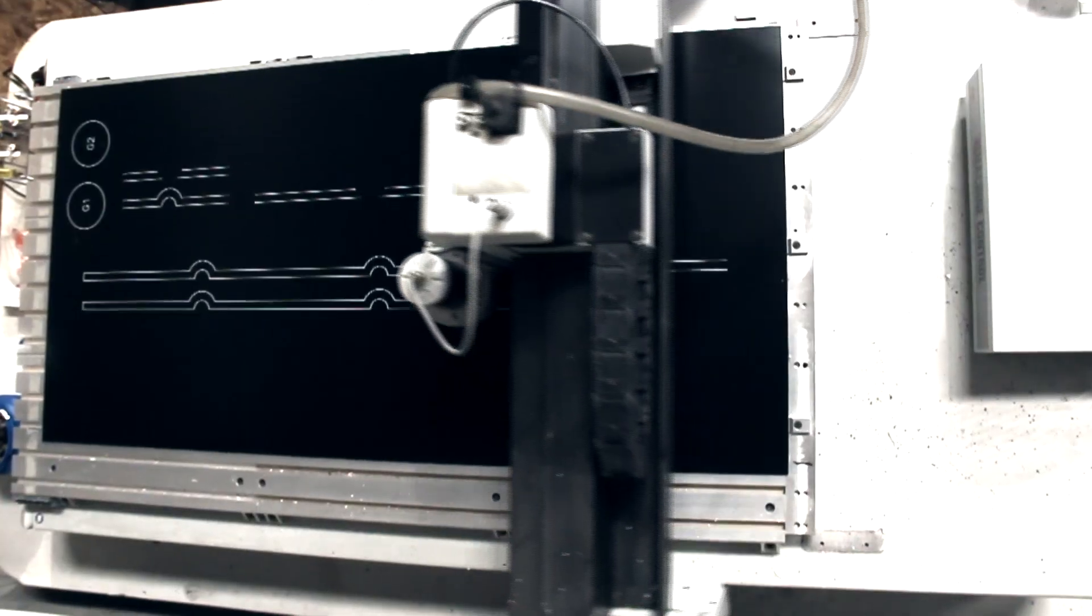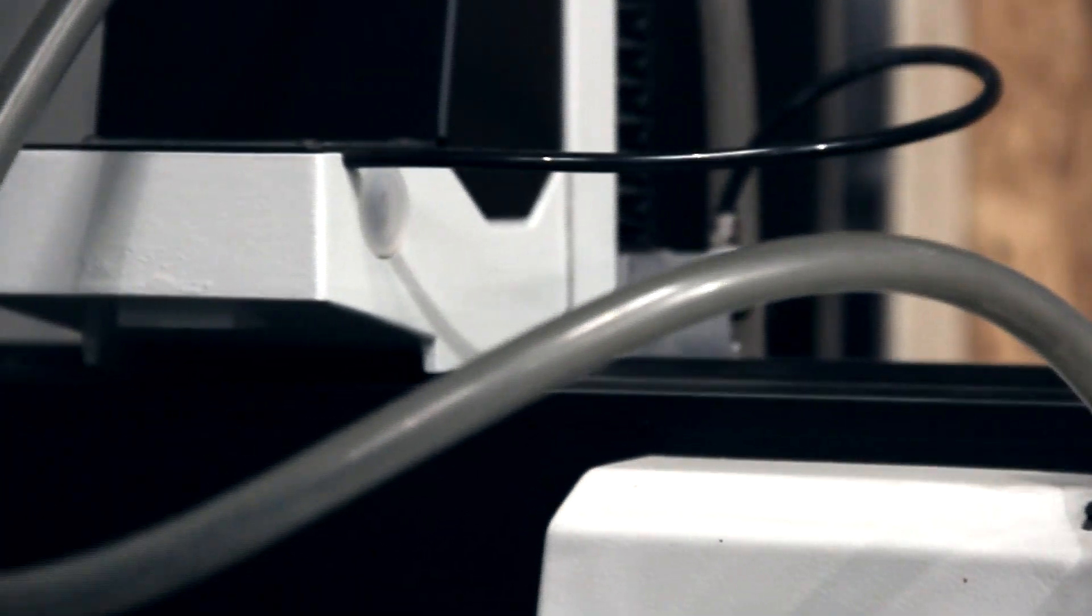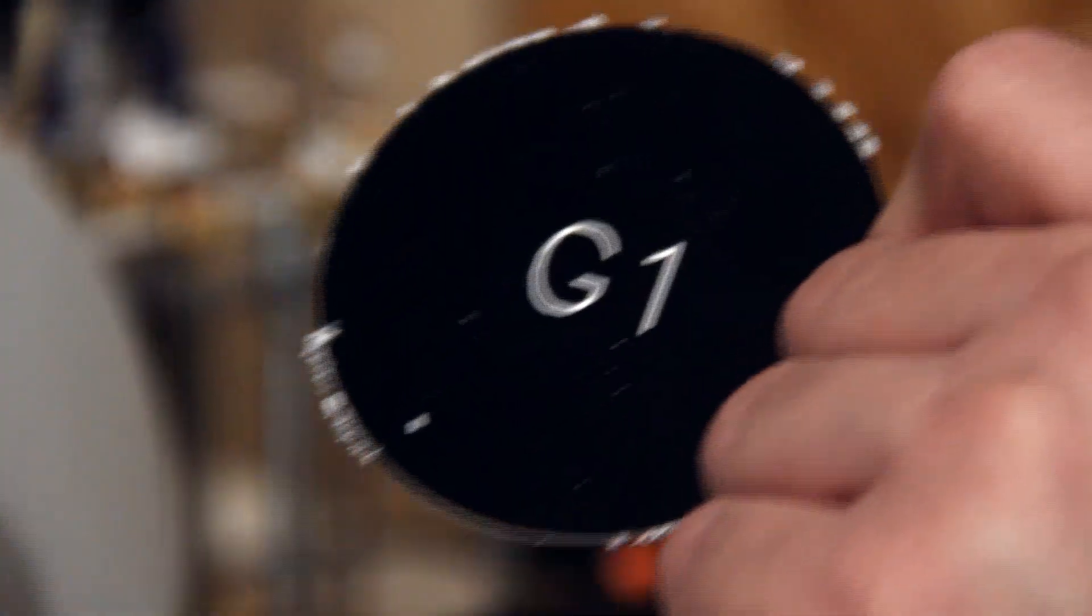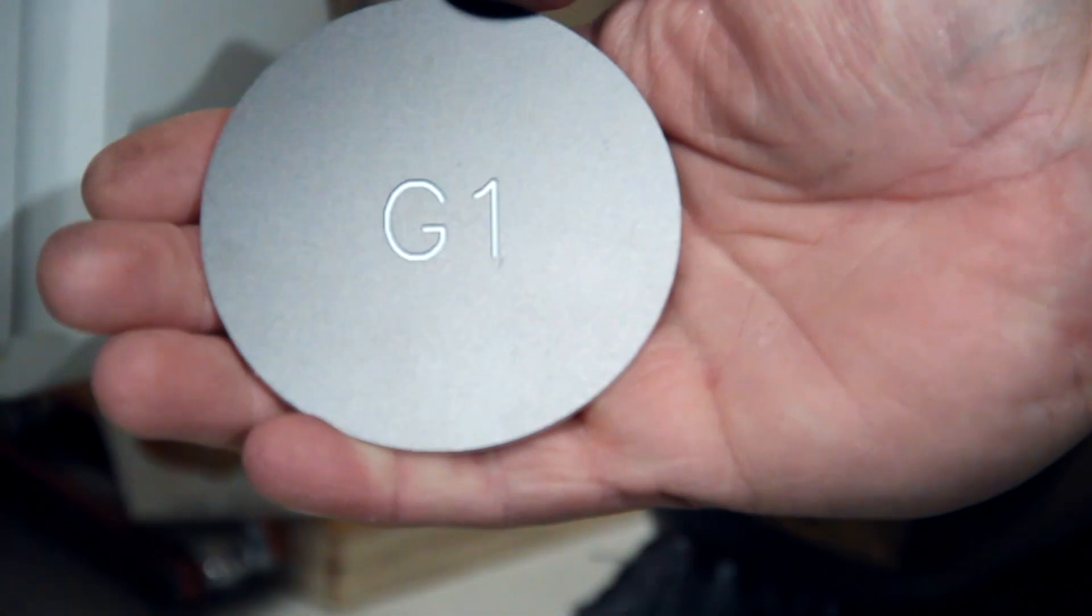We engrave our own labels and tags in-house on a large format engraver. We can do up to 24 by 48 inches and use a specialized process of reverse engraving which allows for a very smooth surface that's easy to clean and very durable. It also allows us to have custom colors and logos for our customers.